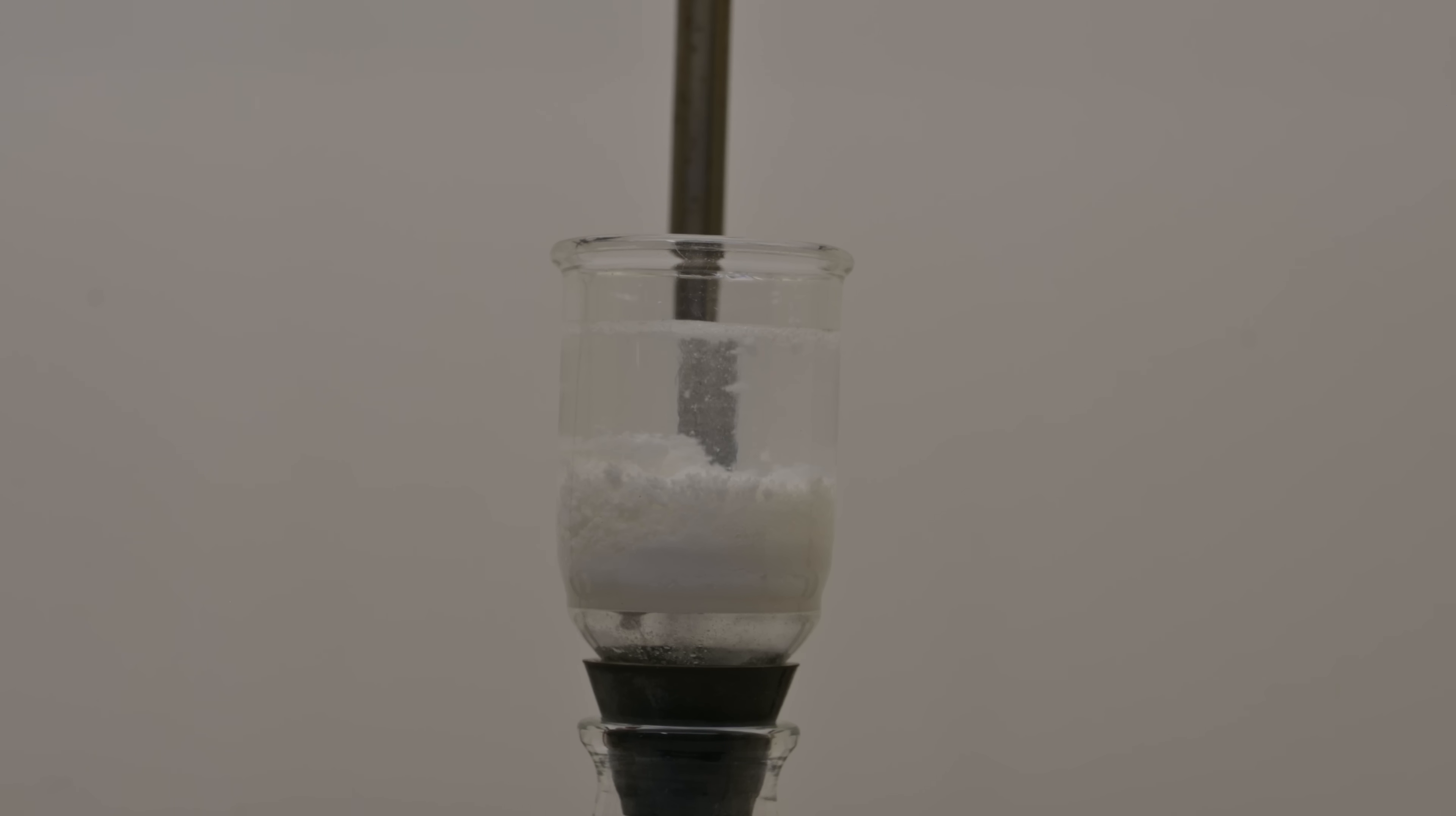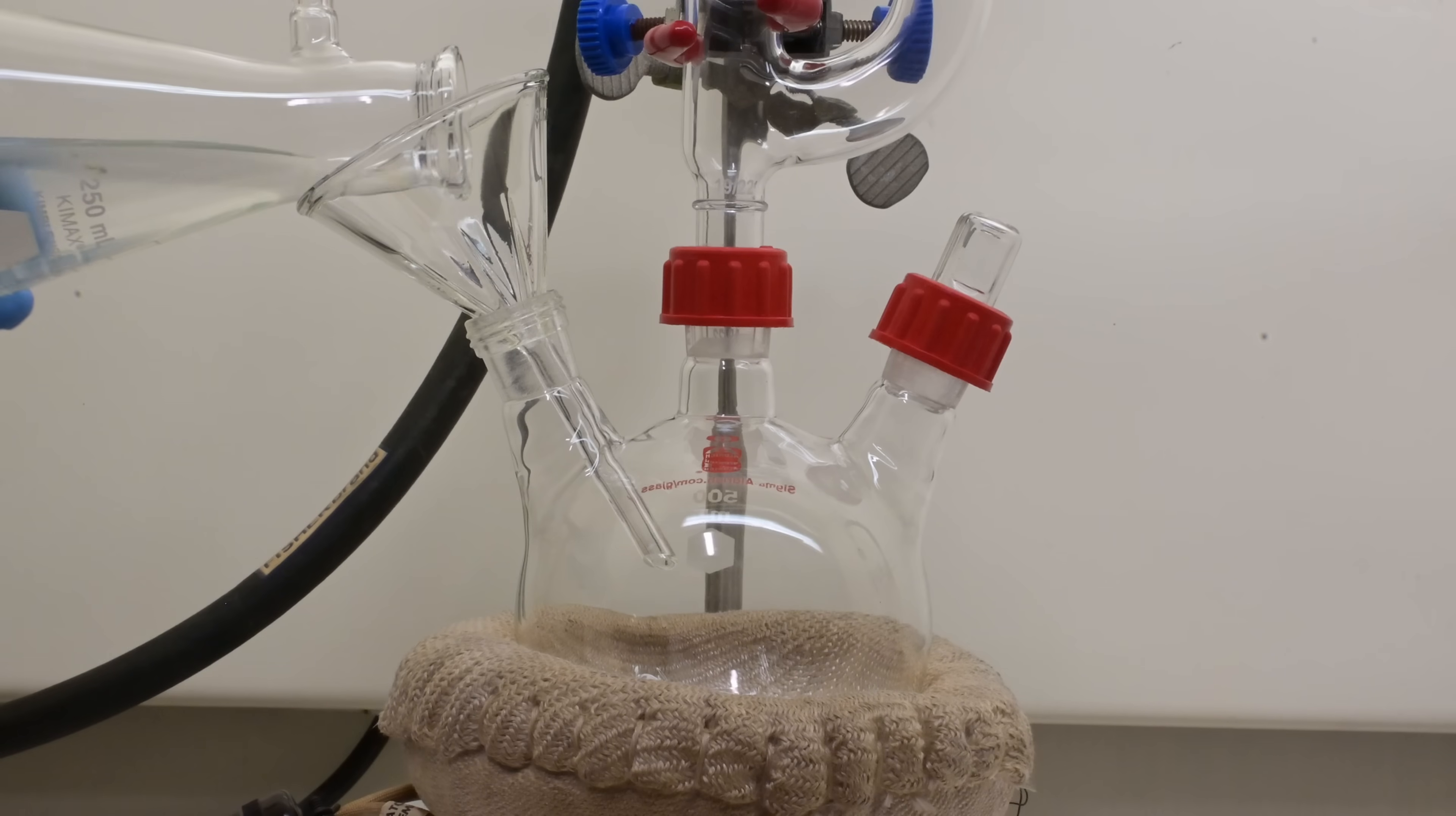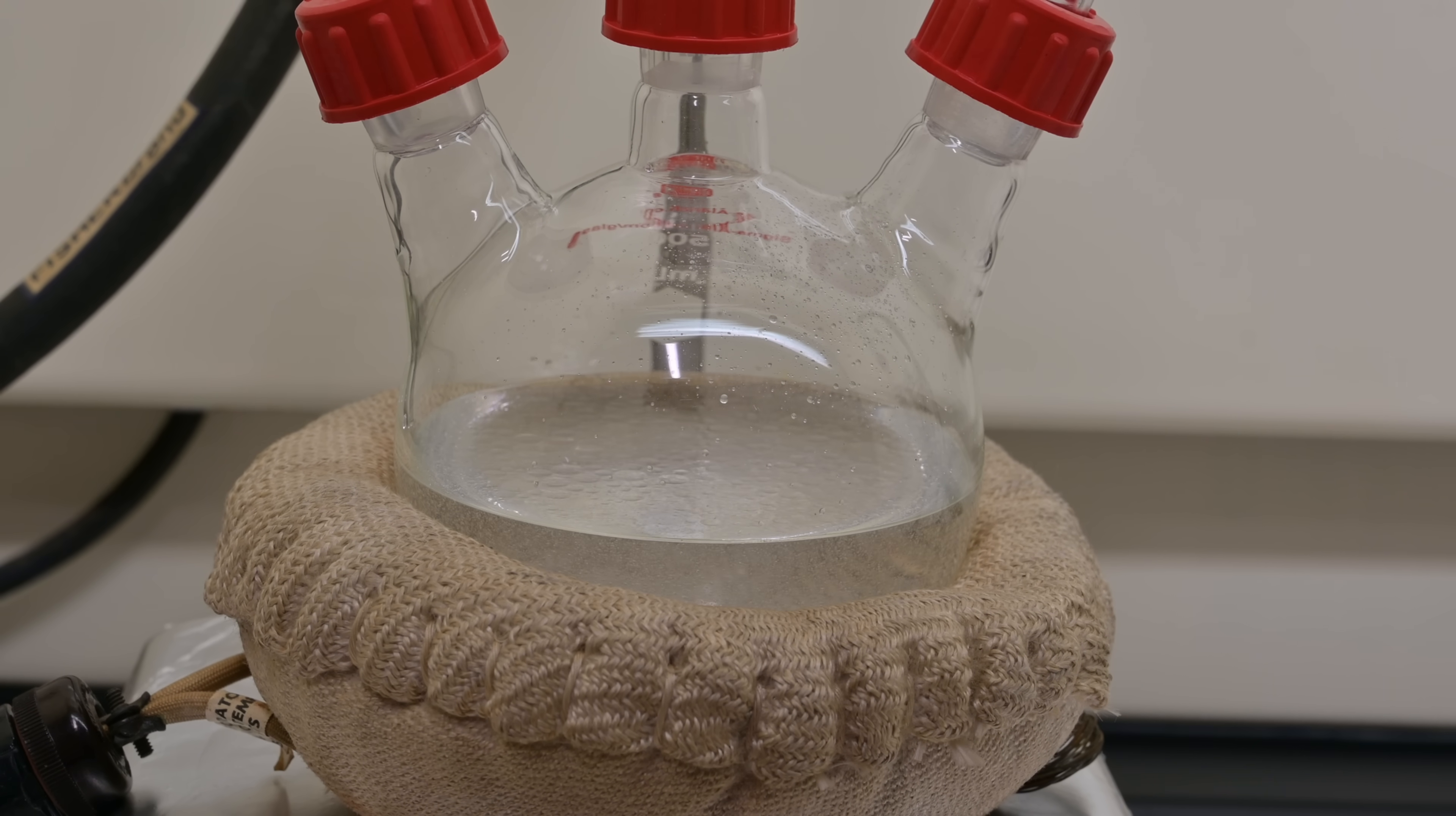The next step is to recover benzaldehyde in its unbound form from these crystals. To do this, I added an excess of dilute sulfuric acid around 5 molar. Concentrated sulfuric acid can be purchased as drain cleaner. The acid breaks the bisulfite adduct apart, releasing pure benzaldehyde. To further purify the benzaldehyde, I perform steam distillation. We transfer the sulfuric acid and benzaldehyde to the boiling flask and add some excess water to the flask. The typical steam distillation setup is similar to that of simple distillation, with the main difference being the use of a Claisen adapter. This technique is particularly useful because it allows benzaldehyde to distill at a lower temperature than it normally would at its boiling point, reducing the risk of thermal degradation.